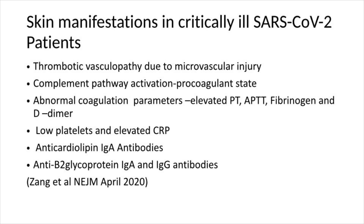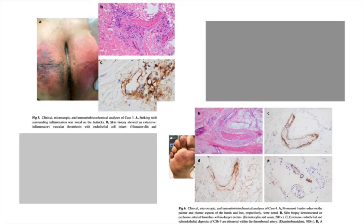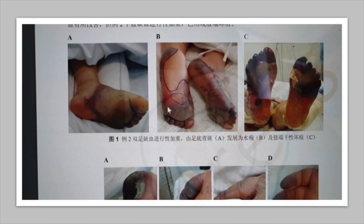In critically ill patients, skin manifestations include thrombotic vasculopathy manifesting as a DIC-like picture. Laboratory parameters that are abnormal include elevated prothrombin time, partial thromboplastin time, fibrinogen, and D-dimer, along with low platelets and elevated CRP. Anti-phospholipid antibodies such as anti-cardiolipin and anti-beta-2-glycoprotein are also elevated, as reported in the NEJM from China. Biopsies in critically ill patients corresponded to deep-seated vasculitis of large vessels causing thrombotic occlusion, with thrombotic episodes such as gangrene seen in these patients — predominantly ischemic events in the extremities showing vascular compromise.